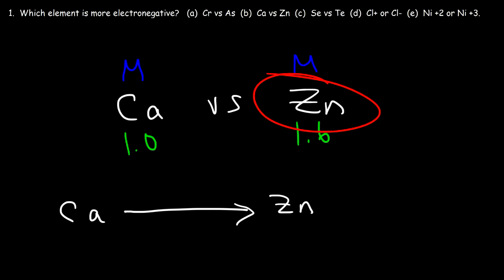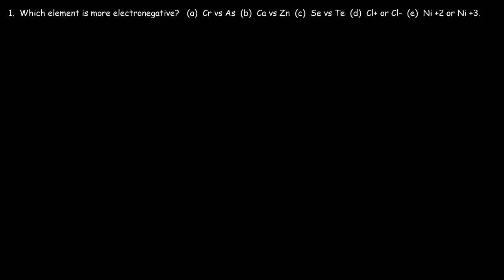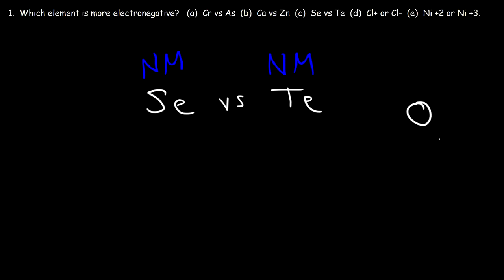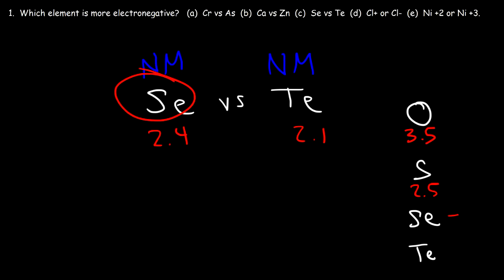Part C: let's compare selenium and tellurium. Both are nonmetals — they're chalcogens. Oxygen has an electronegativity of 3.5 and sulfur is 2.5. Selenium is about 2.4 and tellurium is 2.1, so selenium is clearly more electronegative. Selenium is also above tellurium on the periodic table, and electronegativity increases as you go up within a column.